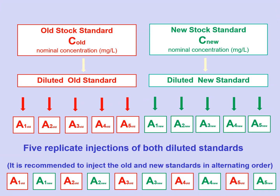Finally, both diluted solutions shall be injected five times into the chromatograph and detector system, alternating the injections of the old and the new standard solution. In this way, five detector responses — which could be areas or heights — are obtained for the old standard solution and five for the new standard solution.